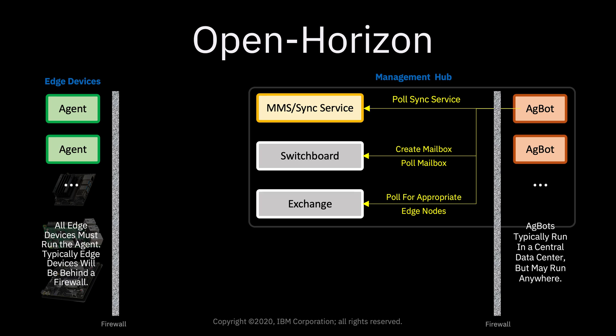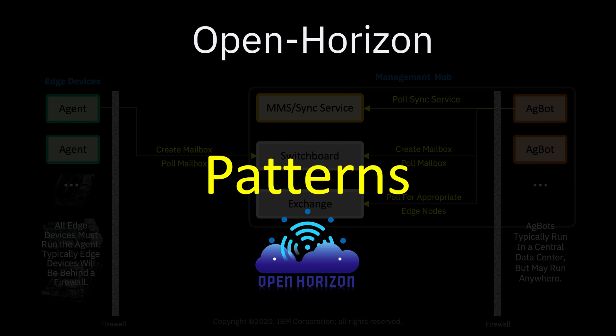The agbot also polls the sync service, which I'll talk about last. The agent is quite symmetric to the agbot in this regard: it creates a mailbox for itself in the switchboard and polls that mailbox until it ceases to exist. There are two different mechanisms you can use in Open Horizon for software deployment: software deployment patterns and policies. The pattern mechanism is simpler and recommended for beginners, but the policy mechanism is more powerful.